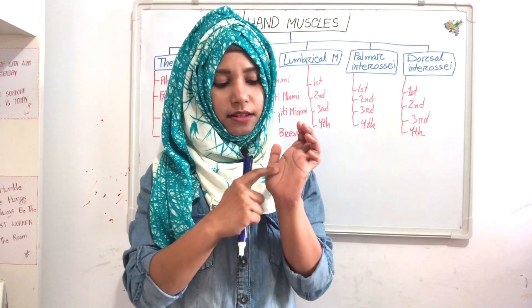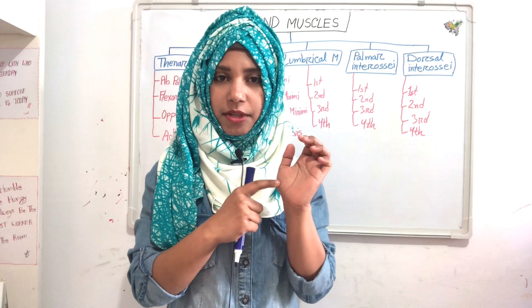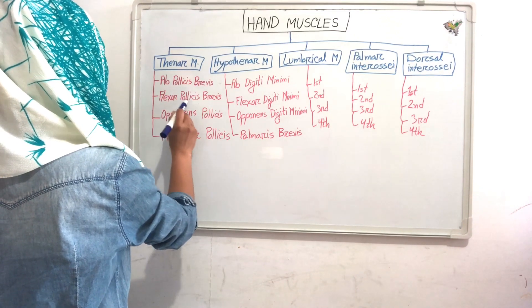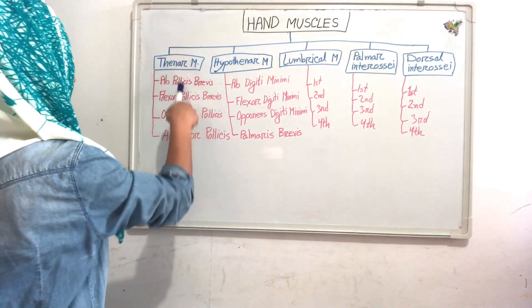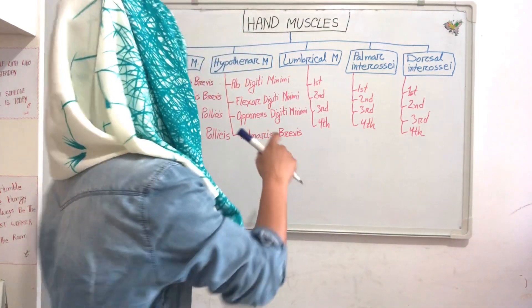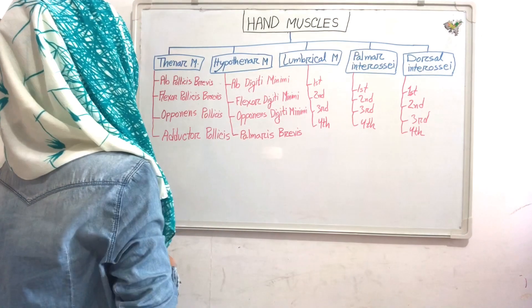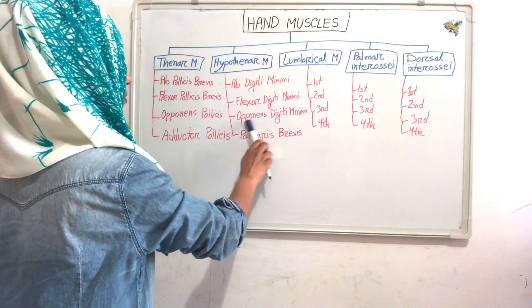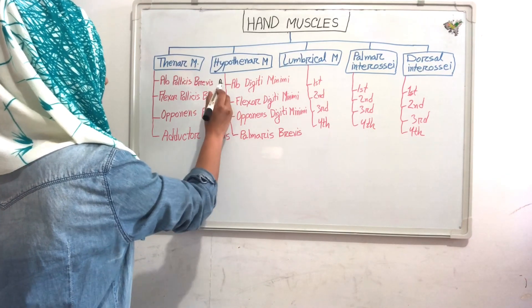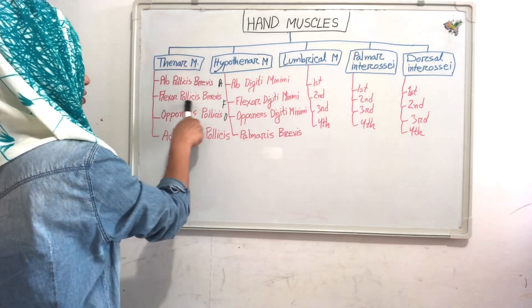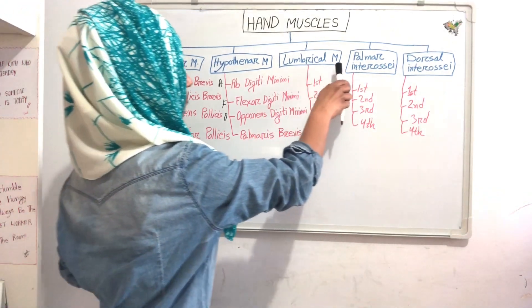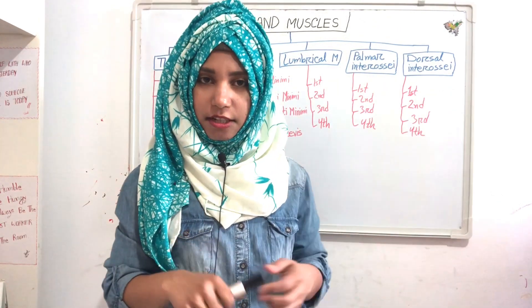First we will see our thenar muscles. This is our thenar eminence on the side of our thumb — we use thenar muscles for the thumb. That's why they are named with 'pollicis': abductor pollicis brevis, flexor pollicis brevis, opponens pollicis, adductor pollicis. For hypothenar muscles, this is our hypothenar eminence — these muscles are used for the little finger. That's why instead of 'pollicis' we use 'digiti minimi': abductor digiti minimi, flexor digiti minimi, opponens digiti minimi, palmaris brevis.